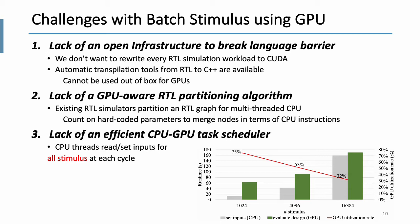Third, lack of an efficient CPU-GPU test scheduler. Each cycle, GPU needs to wait until CPU reads or sets inputs for all stimulus. So here is some experimental results. The X-axis is the number of stimulus and the Y-axis is the GPU utilization rate. And as you can see, when the number of stimulus is 1024, the GPU utilization rate is 75%. However, when we increase the number of stimulus to 16K, the GPU utilization rate is dropped to 32%. So we need an efficient CPU-GPU test scheduler to schedule those tasks so that we can overlap CPU and GPU tasks.